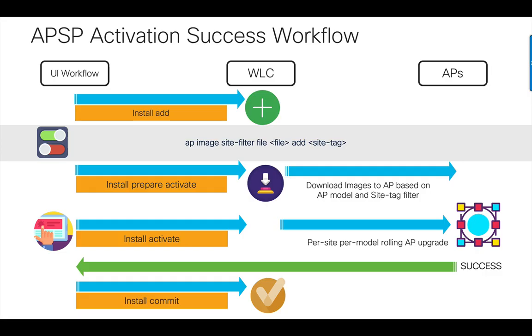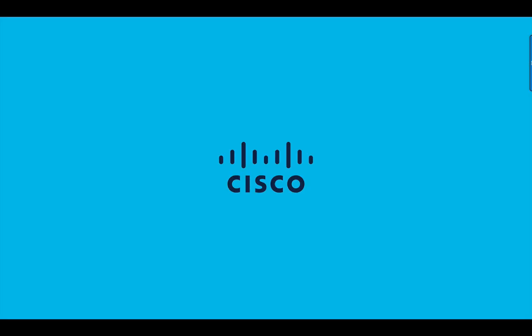Once the fix is verified on one site, it can be rolled out to the other sites as well. Once the entire network has been upgraded with the AP Service Pack, a commit can be installed. In this way, the AP Service Pack enables us to roll out AP bug fixes on a per-site, per-AP-model basis without bringing the entire network down. Thank you for watching.